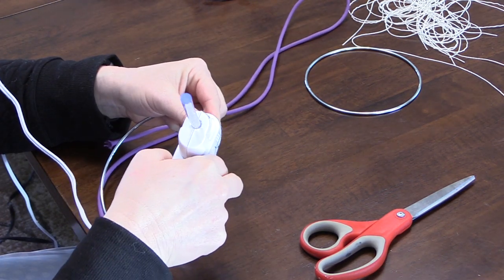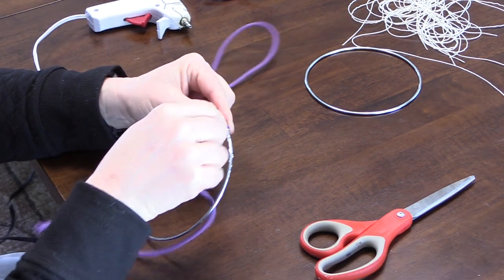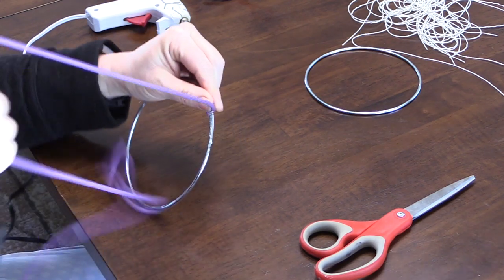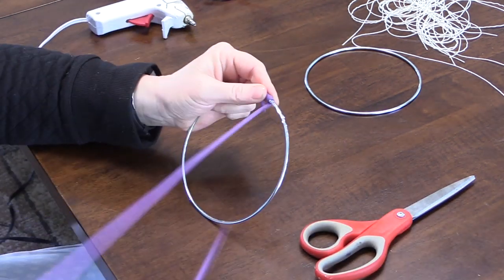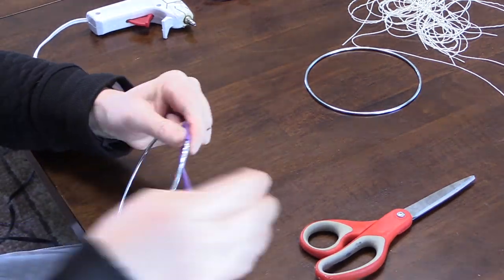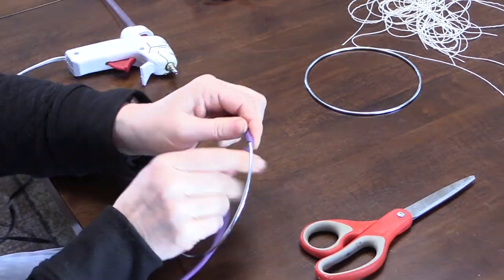So what I did was put a little bit of glue and then I just literally wrapped the paracord around the ring, and I did this all the way around until I was at the other end. It just so happened to work out that this length of paracord was perfect for the ring.